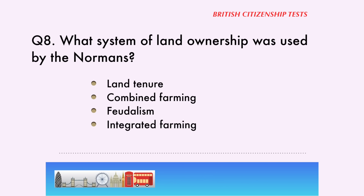Question 8. What system of land ownership was used by the Normans? Land tenure, combined farming, feudalism, integrated farming. The correct answer is... Feudalism.